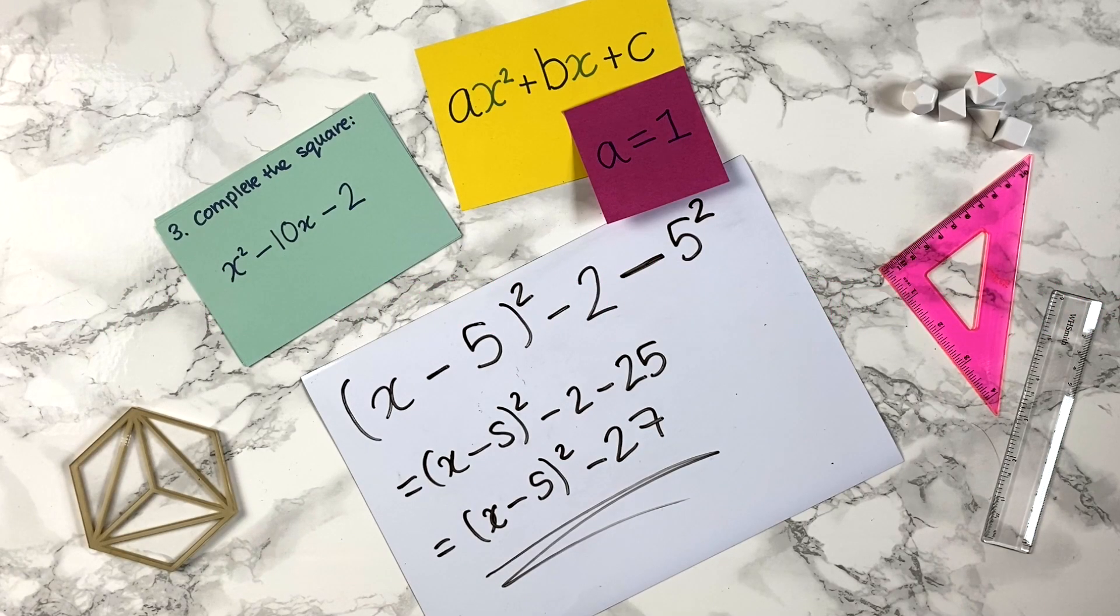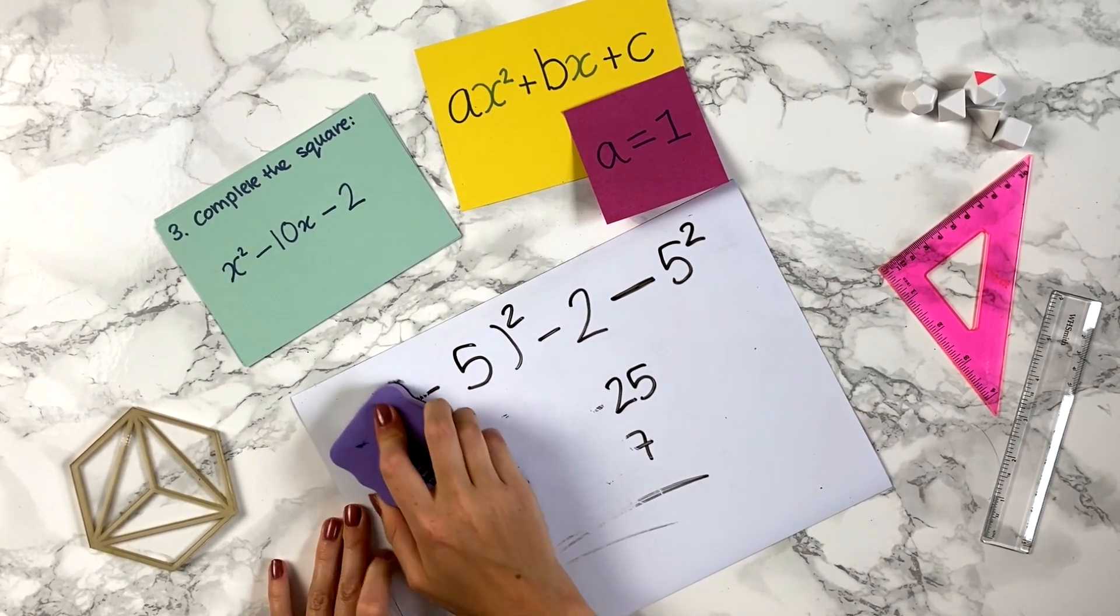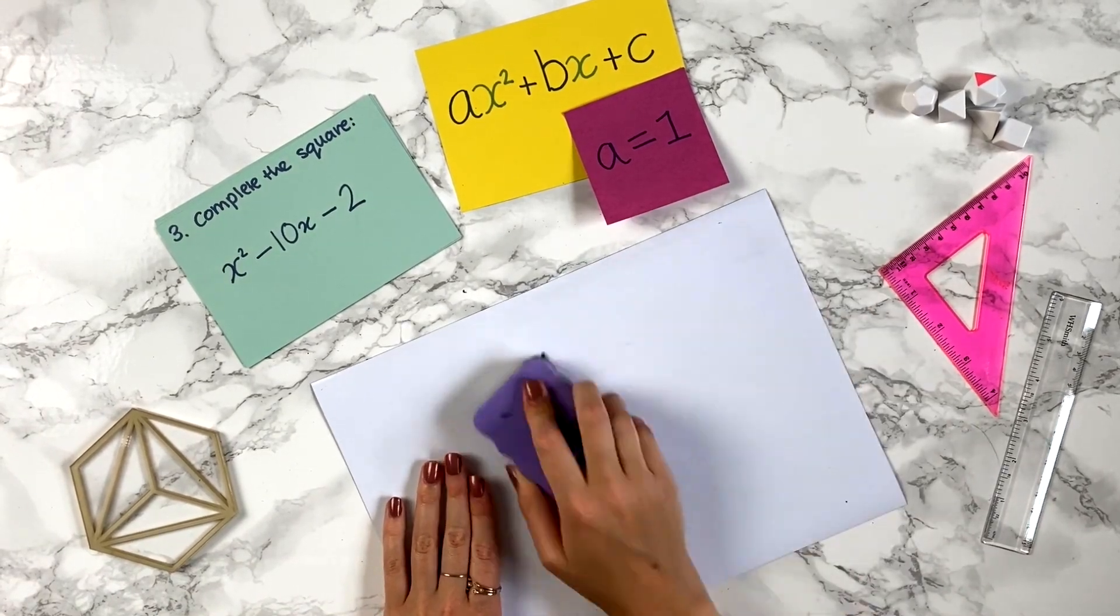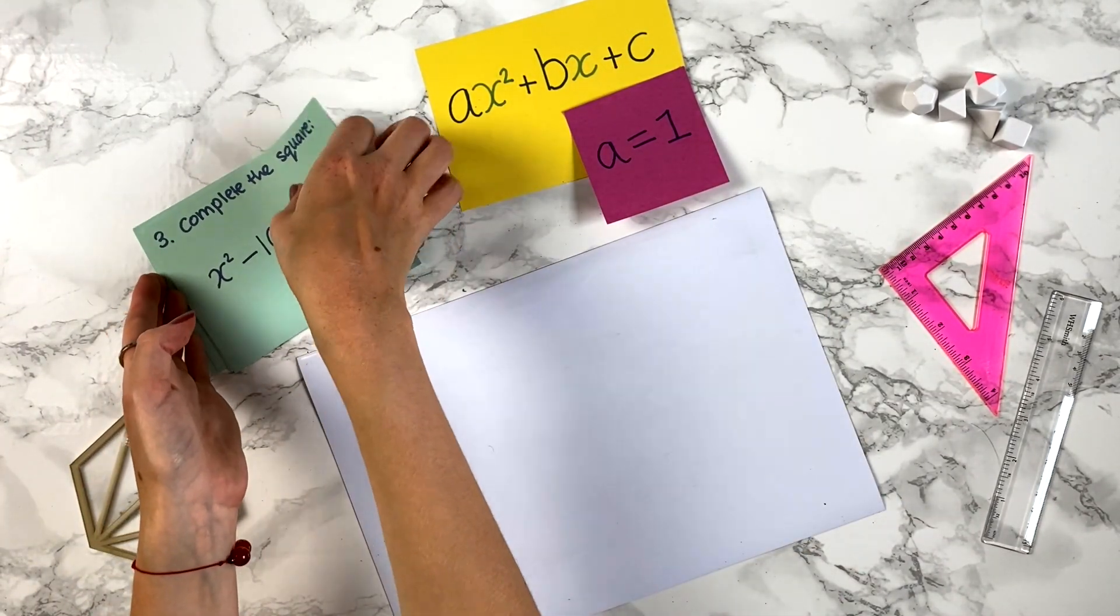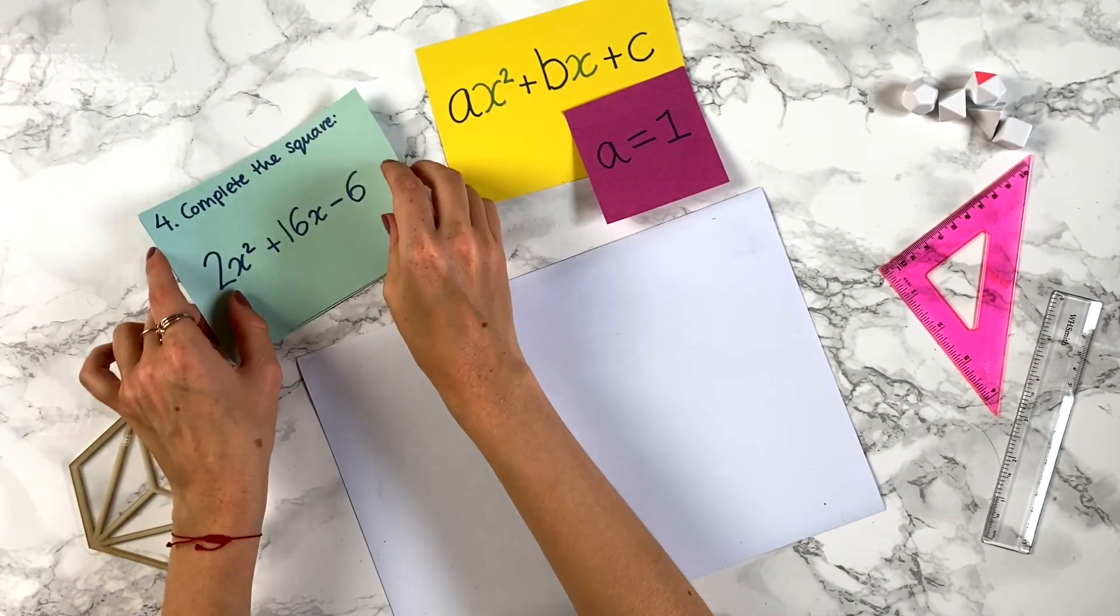In the last video we learned how to complete the square for quadratic expressions where a equals 1. In this video we're going to try some slightly harder ones where a isn't 1 and see how the method differs.